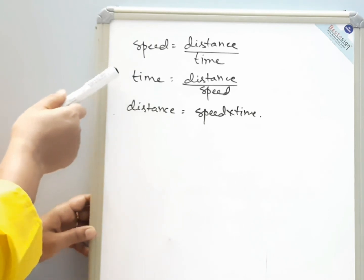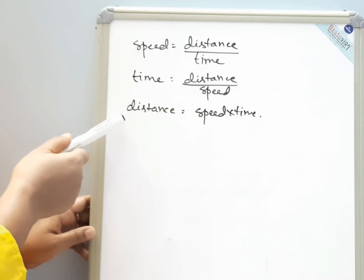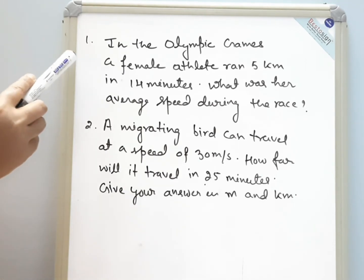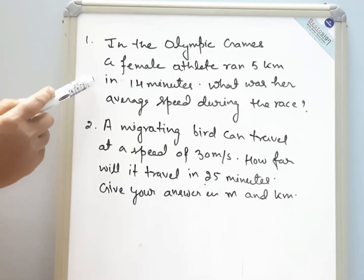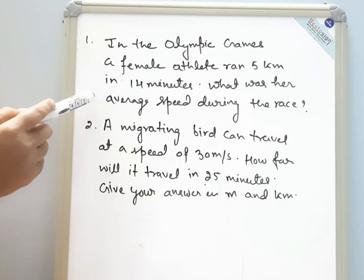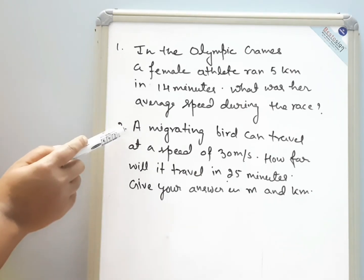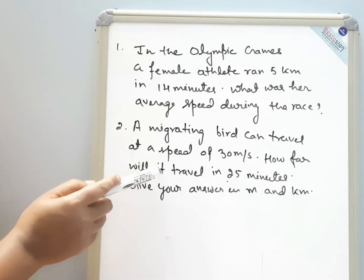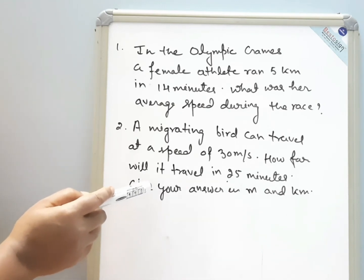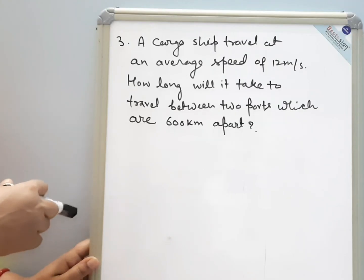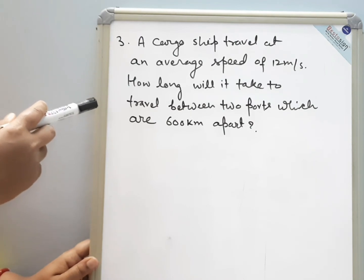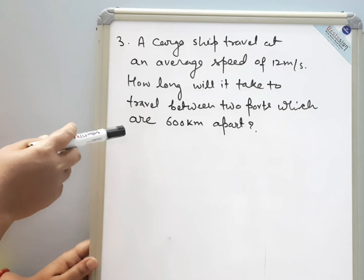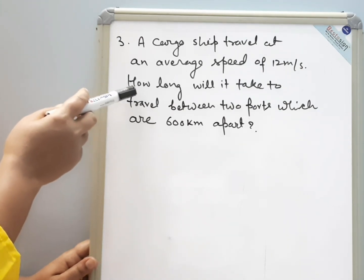In coming questions, we have to use these three formulas to calculate speed, time, and distance. After watching this video, you should be able to answer these questions. First: in the Olympic games, a female athlete ran 5 kilometers in 14 minutes — what was her average speed? Second: a migrating bird travels at 30 meters per second — how far will it travel in 25 minutes? Give your answer in meters and kilometers. Third: a cargo ship travels at an average speed of 12 meters per second — how long will it take to travel between two ports 600 kilometers apart? You need to calculate time.